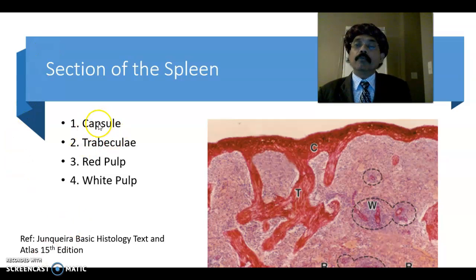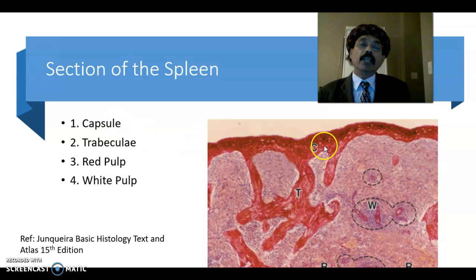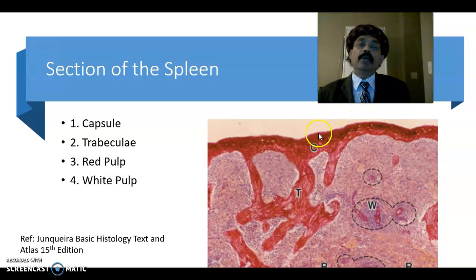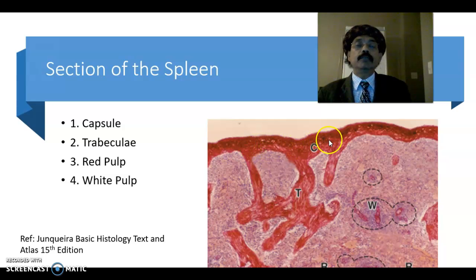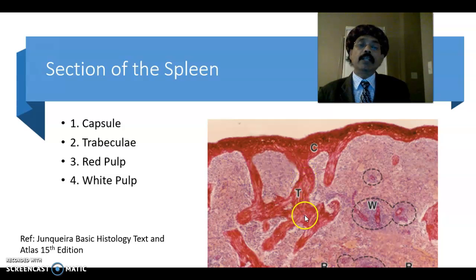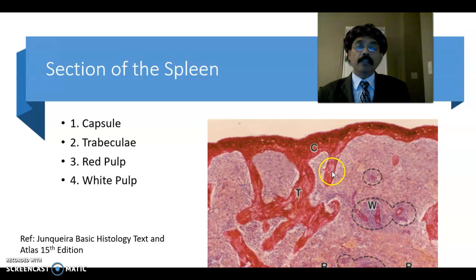The spleen has a capsule. The capsule is composed of connective tissue and it is a thick capsule, covered outside by the visceral peritoneum. From the capsule, we get the trabeculae, which enter into the substance of the spleen.